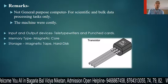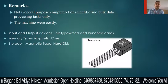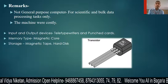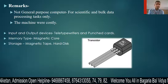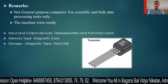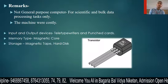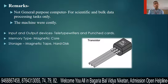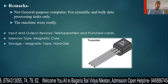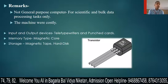Regarding remarks, the second generation computer was not a general purpose computer — it was used for scientific and bulk data processing tasks. It was also more costly. If you talk about input-output devices, a tele-type writer or punch card was used. Memory type was magnetic core, and storage was magnetic tape or hard disk.